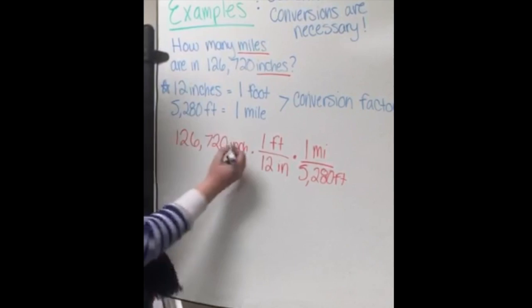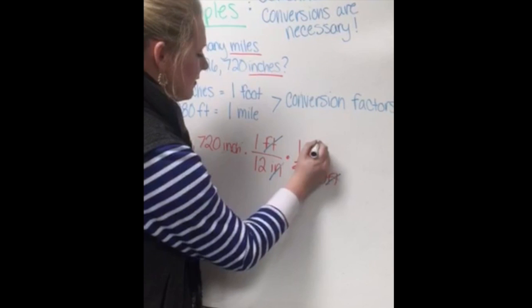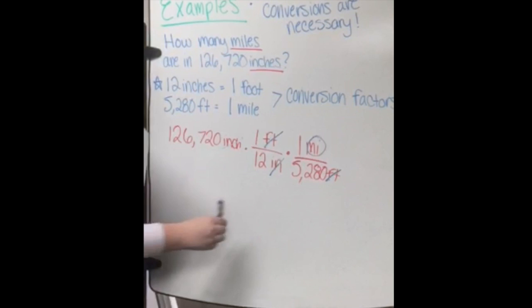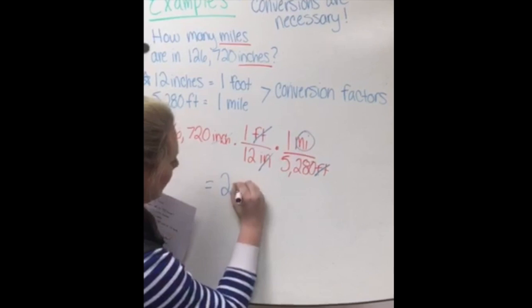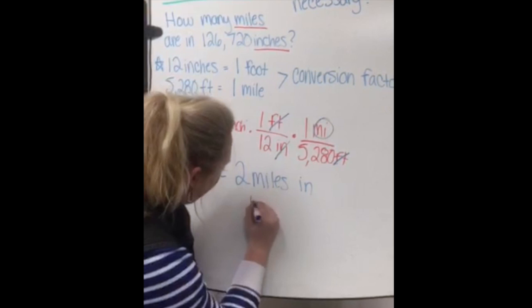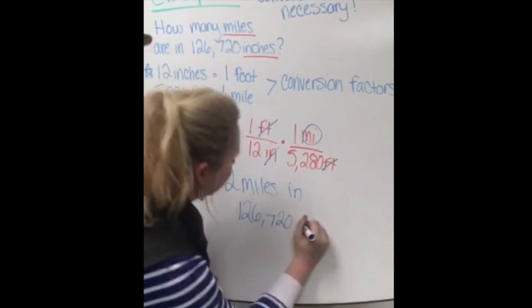So when we start canceling out, we can cancel our inches and we can also cancel our feet, which gives us miles which is what we're looking for in the problem. So once you multiply 12 times 5,280, you divide it by 126,720 inches. That answer gives you 2 miles in 126,720 inches.